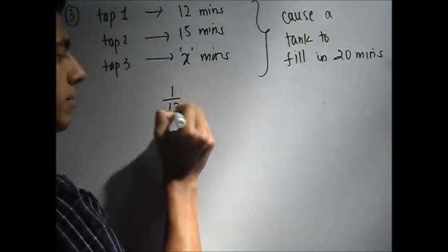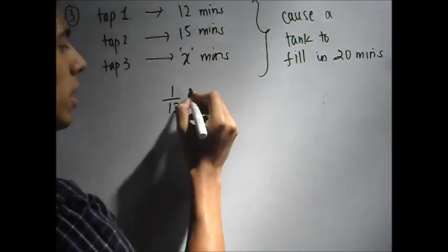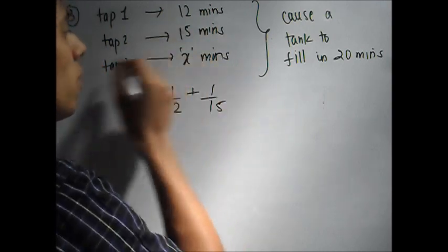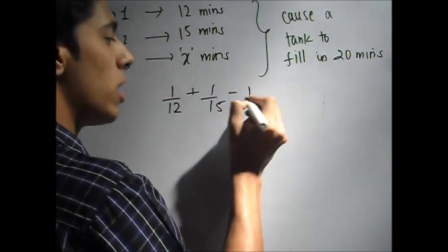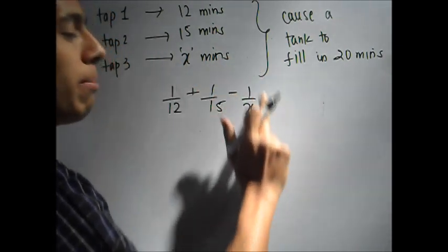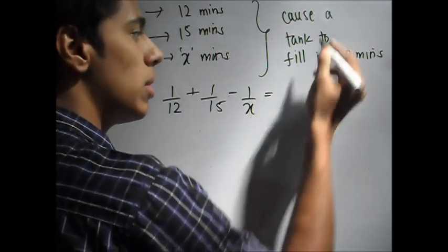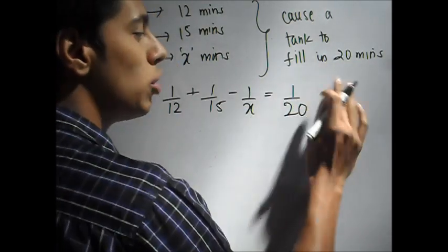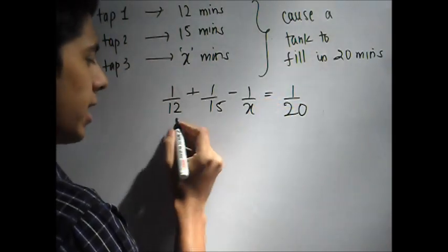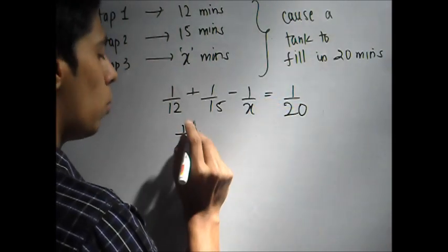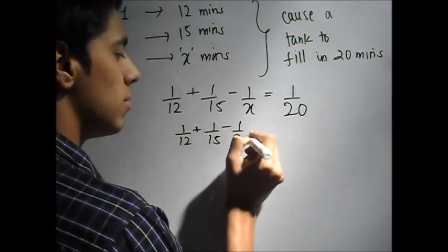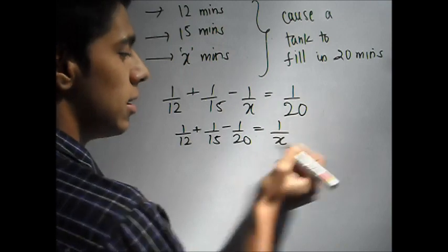Now if you write an equation, 1 over 12, this is per minute, 1 over 15. I'm writing it plus because these both are inlet pipes. However, this is an outlet pipe, so minus 1 over x. It empties it in x minutes, so every hour it empties 1 by x. It's equal to 1 over 20. You should be able to write these equations by now. Now simplify this thing by taking x on the other side. So 1 over 12 plus 1 over 15 minus 1 over 20 is equal to 1 over x. Solve this equation.